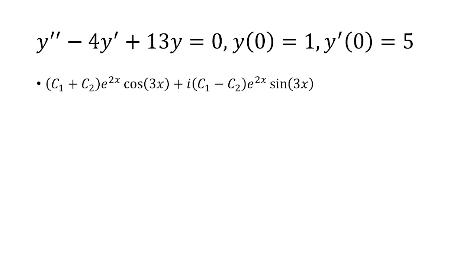And c₁ + c₂ is just a constant, so I'm going to call that c₁. And then i(c₁ - c₂) is another constant. Whenever you see constants, that's just real numbers. But i, we know, is complex. So a complex number is still a constant. So that's why we call it c₂. And so this is our solution.